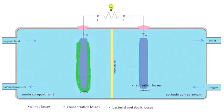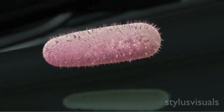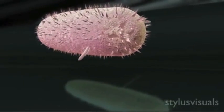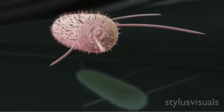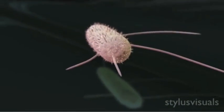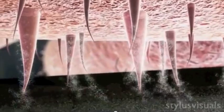Activation losses are described by the capacity of the biofilm to transfer the electrons to the anode. Certain organisms can grow conductive nanowires called pili that directly interact with the anode to transfer electrons.